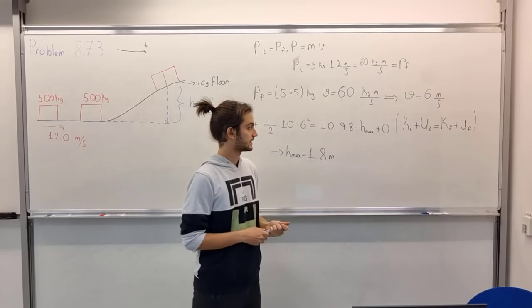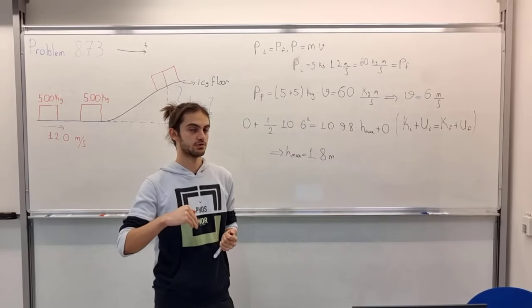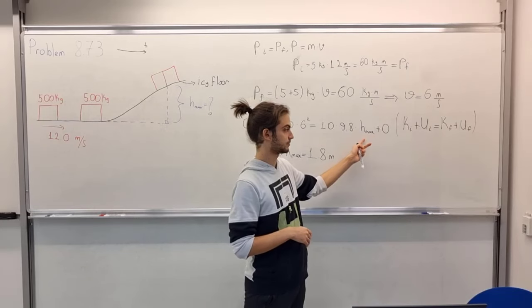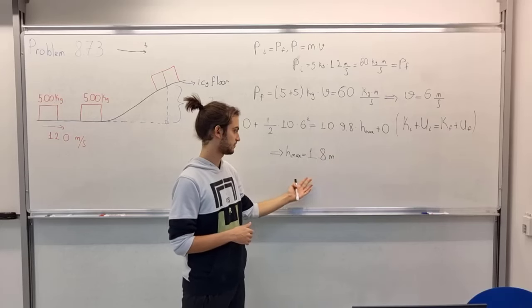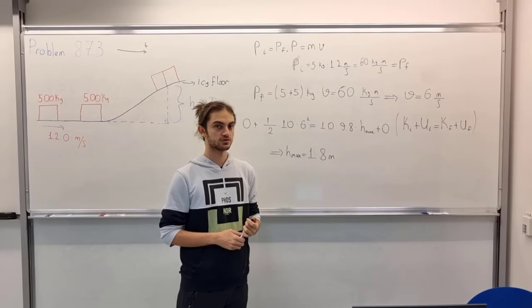So you see that kinetic energy cannot go below zero, so it has to be zero for this to be maximum. So we have, if you do the calculations, we have h max of 1.8 meters.